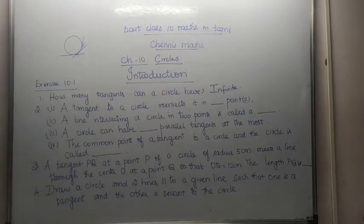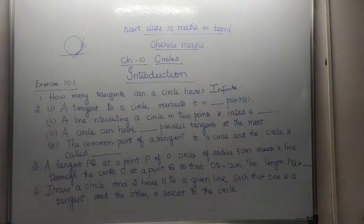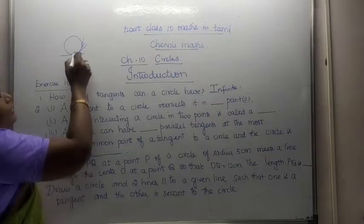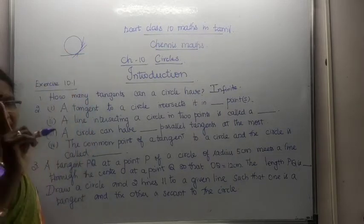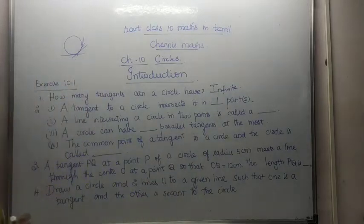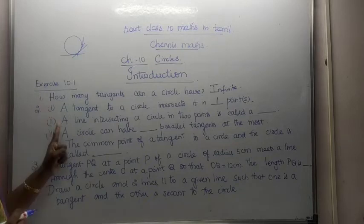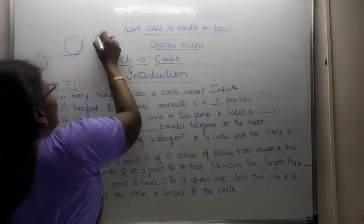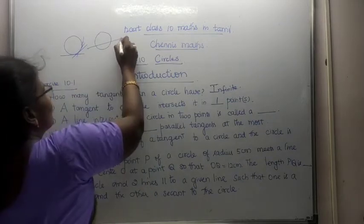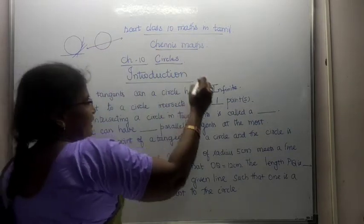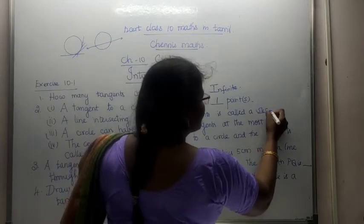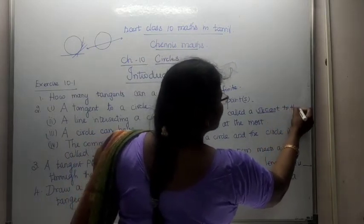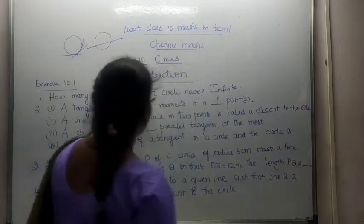A tangent to a circle intersects it in how many points? A tangent touches the circle at only one point. A line intersecting a circle in two points is called a secant to the circle.